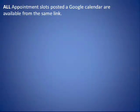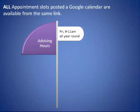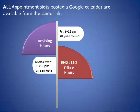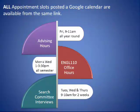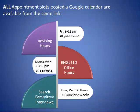All appointment slots posted to a Google Calendar are available from the same link. So on one calendar you may have advising hours on Fridays from 9-11 all year round, your E-110 office hours Monday and Wednesday 1-3:30 p.m. all semester, and search committee interviews Tuesday, Wednesday, and Thursday for two weeks — all available using the same appointment slots link. So it's very important that you name your appointment slots appropriately.